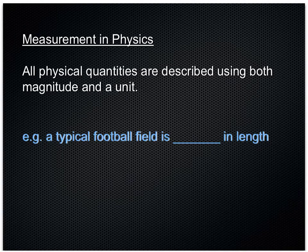Measurement in physics. All physical quantities are described using both magnitude and a unit. The magnitude is the size or how large the value of the quantity is, and the unit is usually an agreed-upon reference that everybody else in the scientific world can relate to.